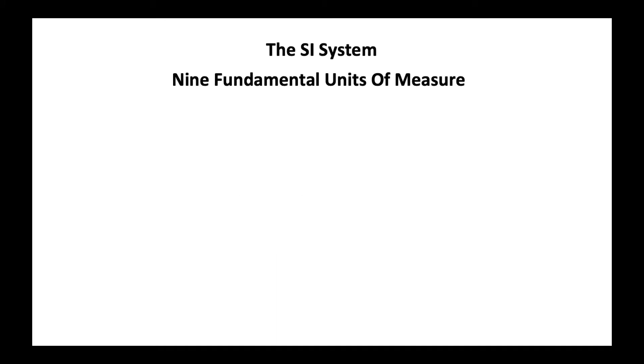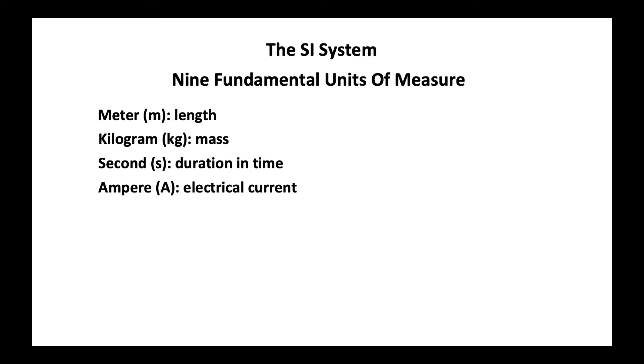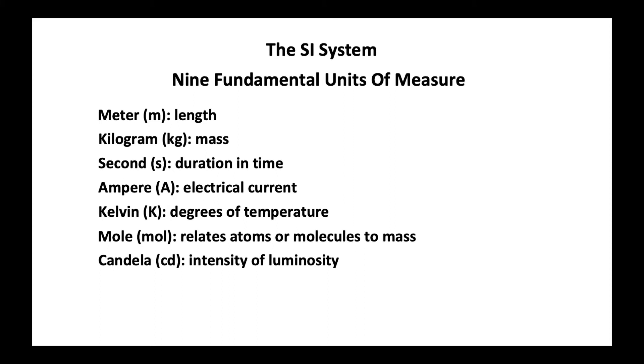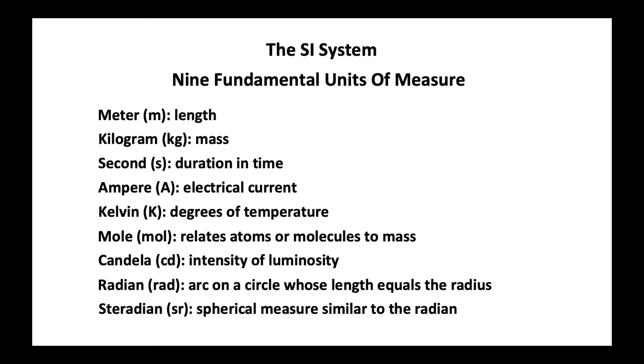The SI system has nine fundamental units of measure. The meter for length, the kilogram for mass, second for duration in time, ampere for electrical current, Kelvin degrees of temperature, mole relates atoms or molecules to mass, candela is an intensity of illumination, radian is an arc of a circle whose length equals the radius, and a steradian which is a spherical measure similar to the radian.